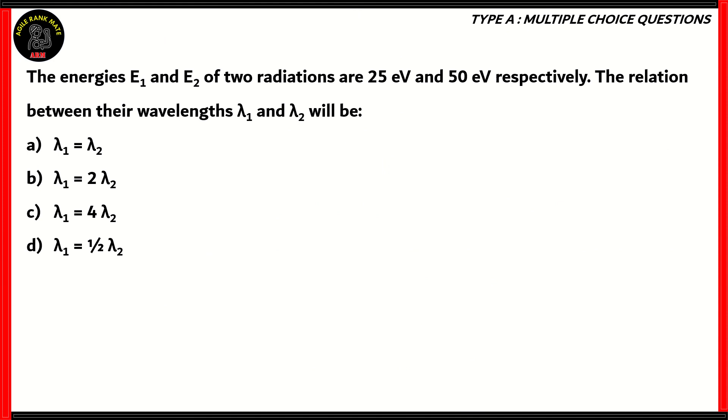Now let's look at the final question for today. The energies E1 and E2 of two radiations are 25 electron volts and 50 electron volts respectively. So E1 is 25 electron volts, E2 is 50 electron volts. The relation between their wavelengths λ1 and λ2 will be: λ1 = λ2, λ1 = 2λ2, λ1 = 4λ2, or λ1 = λ2/2.